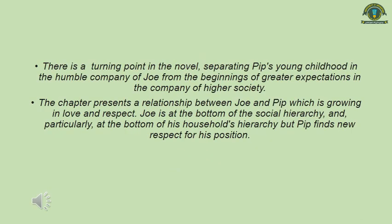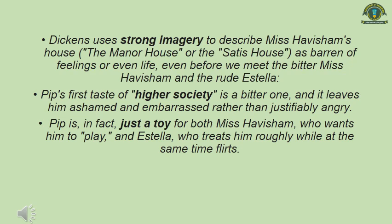There is a turning point in the novel separating Pip's young childhood in the humble company of Joe from the beginning of his great expectations in the company of higher society. The chapters present a growing relationship of love and respect between Joe and Pip. Joe is at the bottom of the social hierarchy, but Pip finds new respect for his position. Dickens uses strong imagery to describe Mrs. Havisham's house as a baron of feelings even before we meet the bitter Mrs. Havisham and the rude Estella. Pip's first taste of higher society is a bitter one, leaving him ashamed and embarrassed rather than justifiably angry. Pip is in fact just a toy for both Mrs. Havisham and Estella.